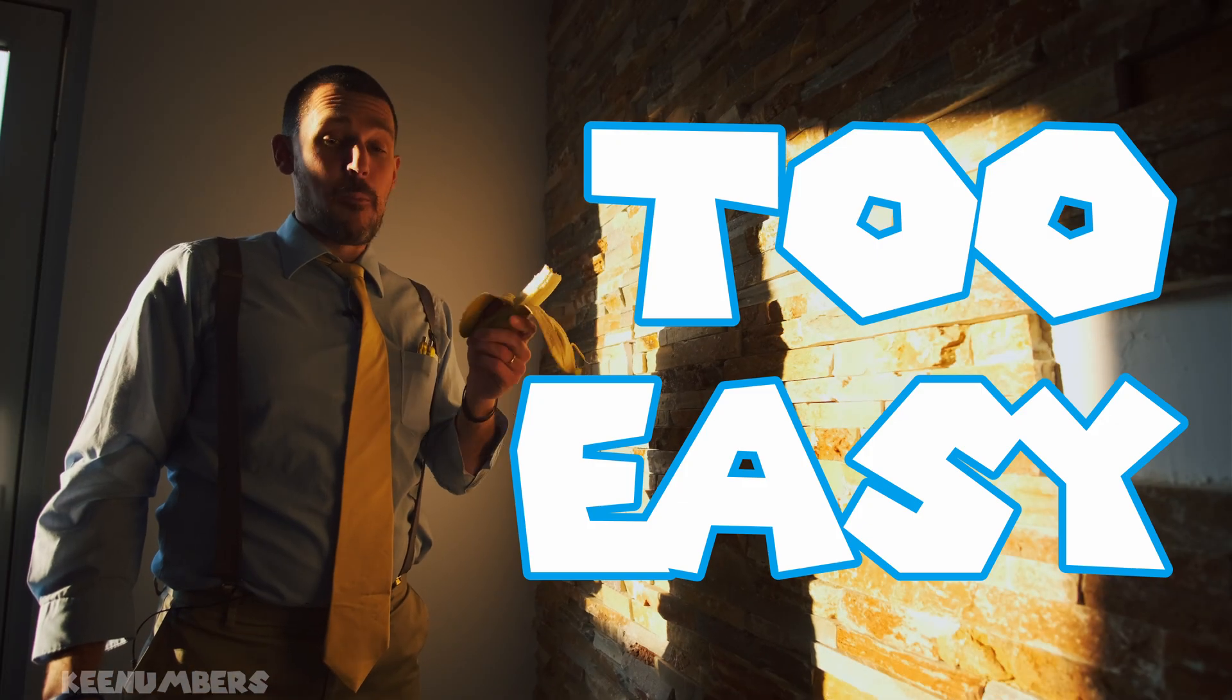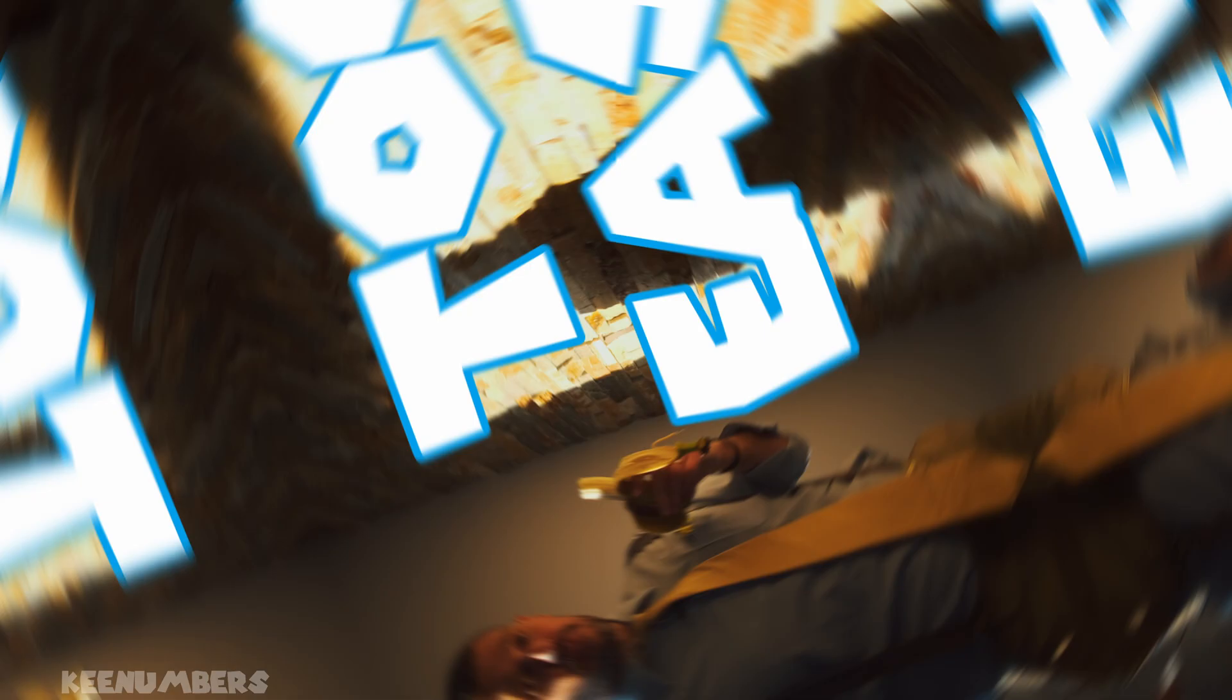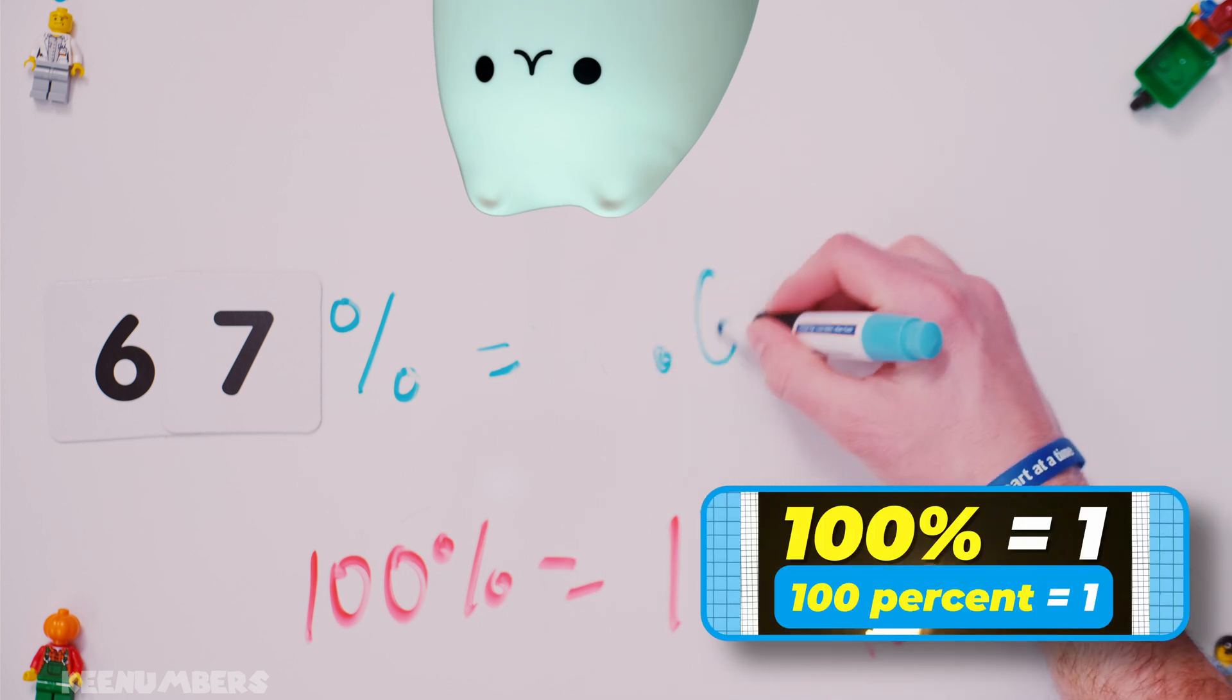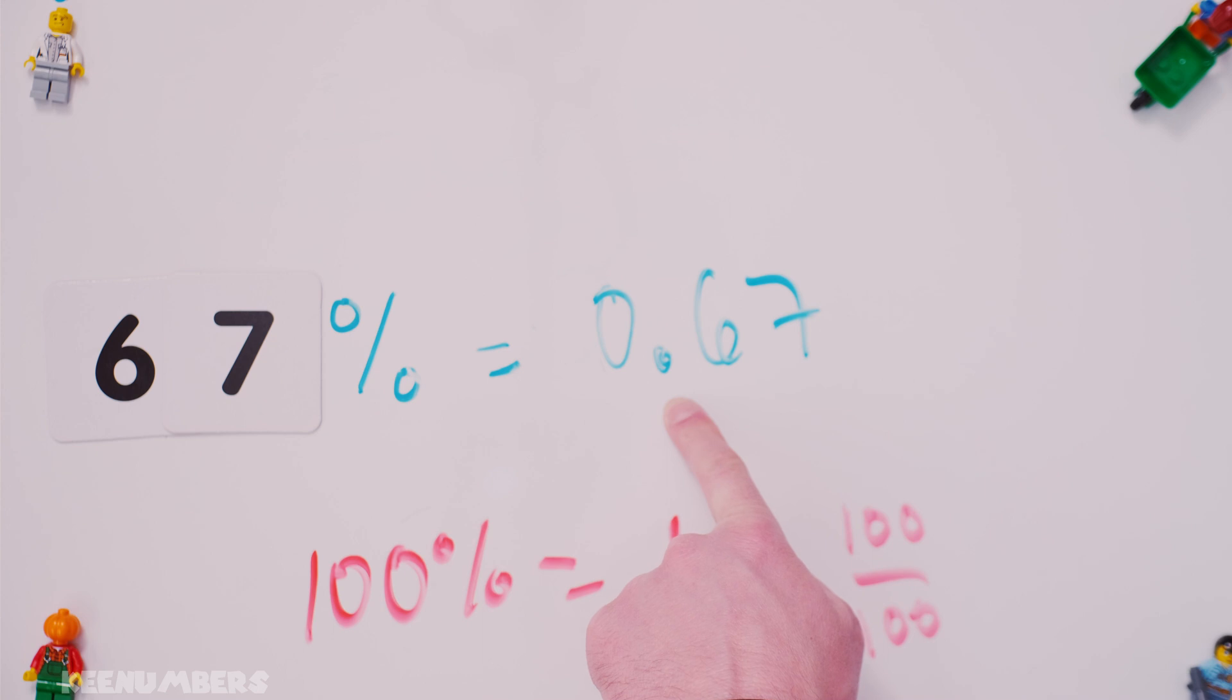That was too easy. Let's do another one. 67%. If there are a hundred percents in one, this is the same thing as .67. And you can put the optional zero there so that you reinforce where that point is going. 0.67.